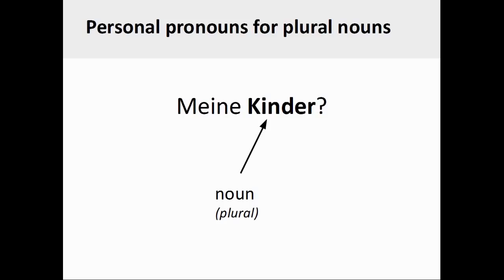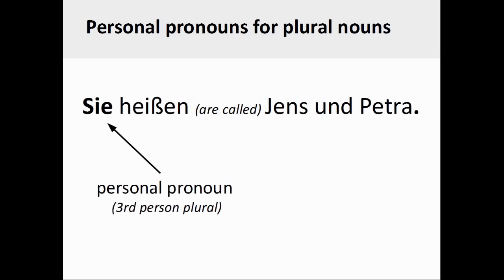Finally, the German noun Kinder has no gender as it is the plural form of the neuter singular noun Kind, or child. If you were to see the definite article of the noun here, it would be die. Since Kinder is a plural noun, the matching personal pronoun to be used is sie — third person plural.